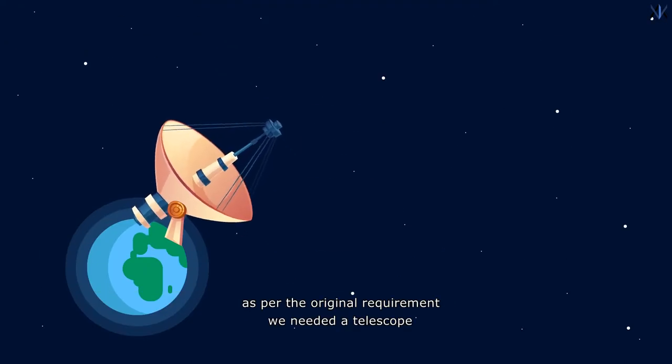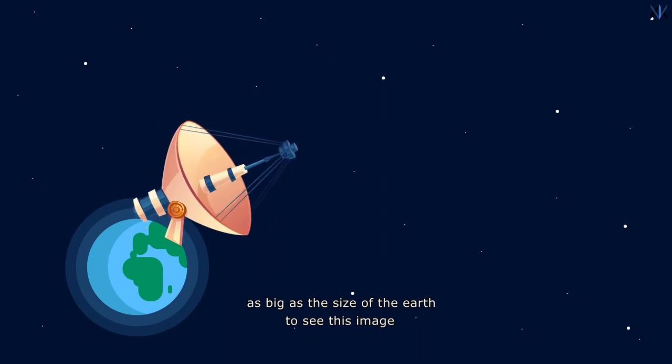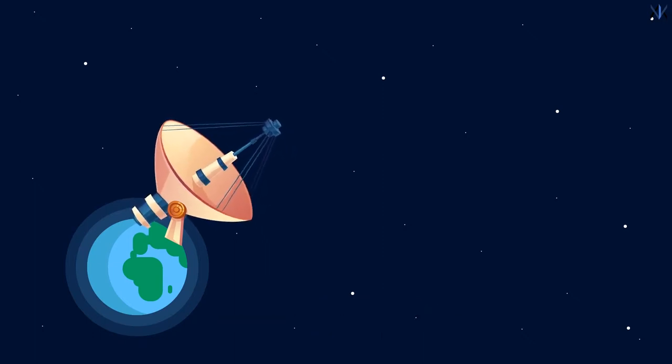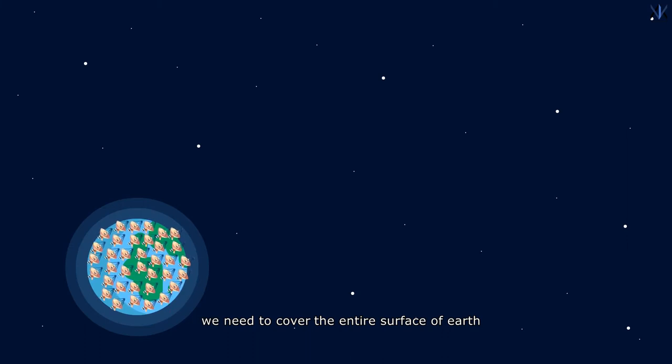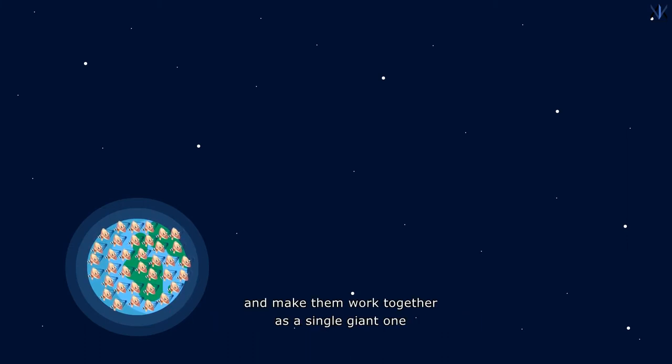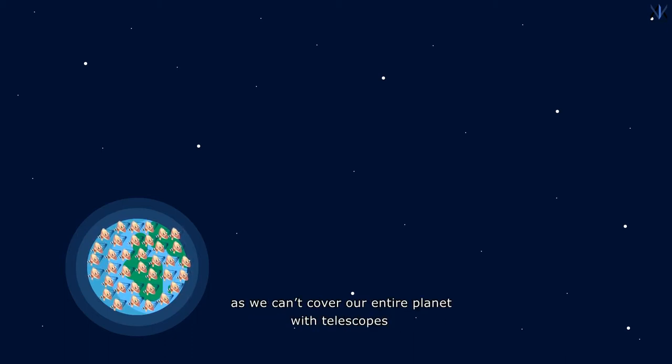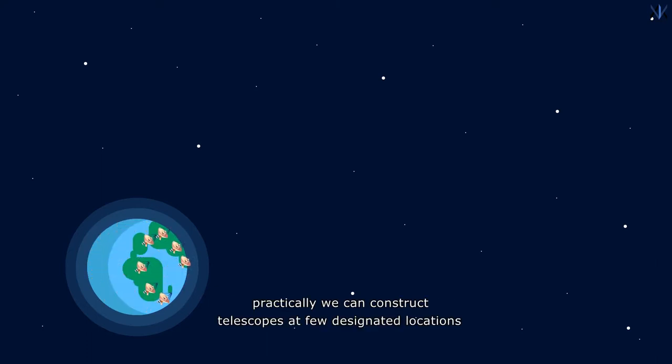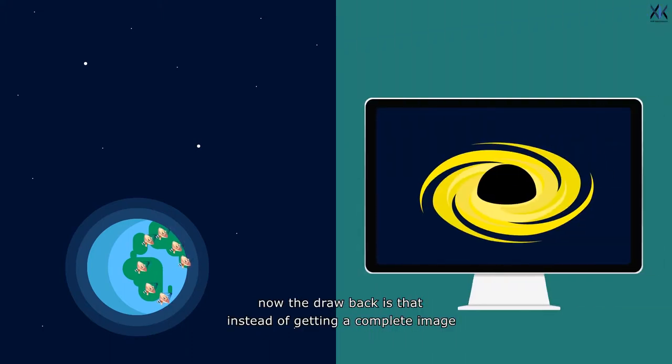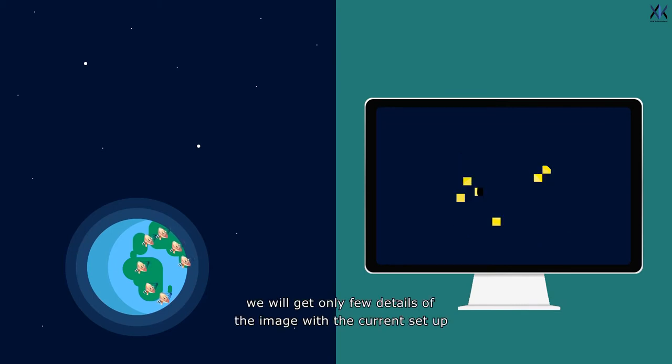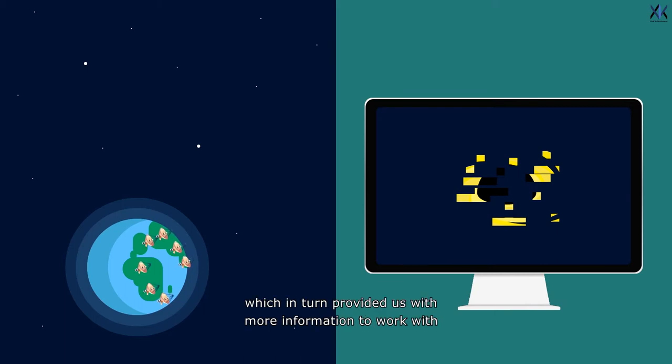As per the original requirement, we needed a telescope as big as the size of the Earth to see this image. So in order to get the same end result, we need to cover the entire surface of Earth with the available size telescopes and make them work together as a single giant one. But even this idea is not feasible as we can't cover our entire planet with telescopes. Practically we can construct telescopes at few designated locations and work with them. Now the drawback is that instead of getting a complete image which was possible with a planet full of telescopes, we will get only a few details of the image with the current setup. But the rotation of Earth ensured that the telescopes get to observe different parts of the same image, which in turn provided us with more information to work with.